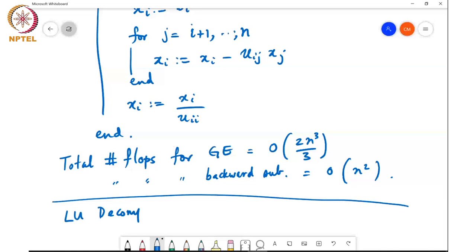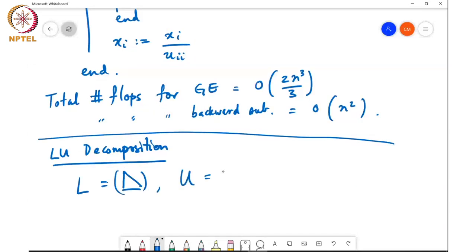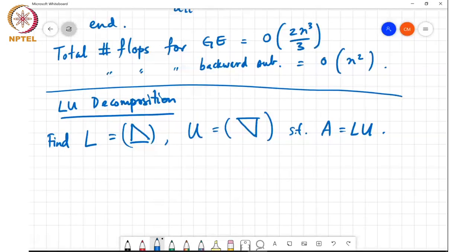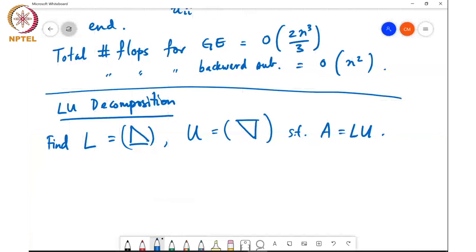So we want to find L which is a lower triangular matrix and U which is an upper triangular matrix such that A is equal to LU. Okay so the questions are how do you perform this LU decomposition and what is its computational effort and finally what is the relationship between Gaussian elimination and LU decomposition? So the first point about finding this or first step in finding this LU decomposition is Gauss transforms.